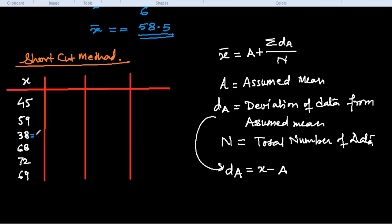So we get here dA, which is x - A. 45 - 38, it is positive 7. 59 - 38, it is 21. 38 - 38 is 0. 68 - 38, we get here 30. 72 - 38, we get 34. 69 - 38, here we get 31.